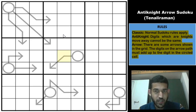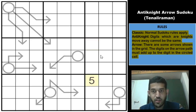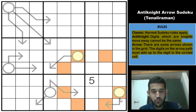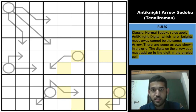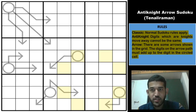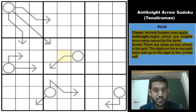A knight moves two steps in one of the orthogonal directions and then one step in the perpendicular direction. For example, if you have a 5 in a cell, all cells a knight's move away cannot contain 5. The next part of the rule is arrows: there are some arrows shown in the grid. The digits in the arrow path must add up to the digit in the circle cell. Digits may repeat along an arrow provided there is no violation of standard classic rules.